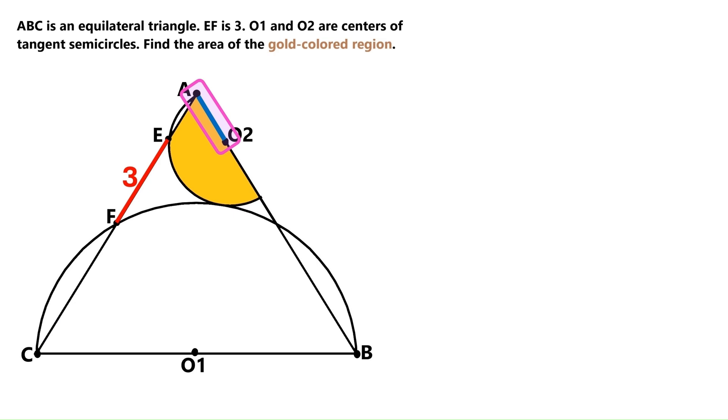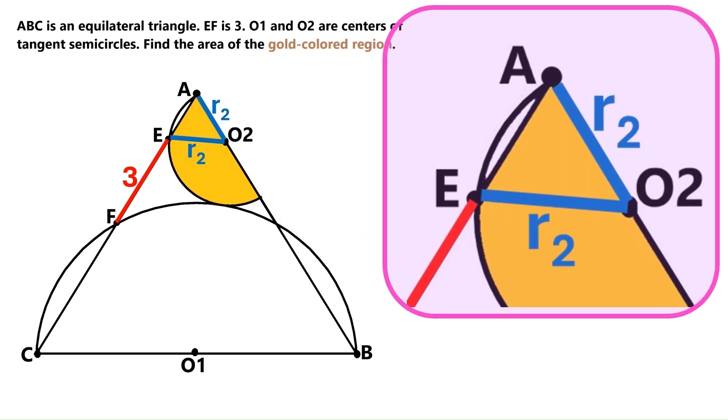First, let's draw a radius for the small semicircle here. We'll call it R2, and we have another R2 down here. Now, I'll take this top part and move it over here to zoom in, so that you can see what's going on.